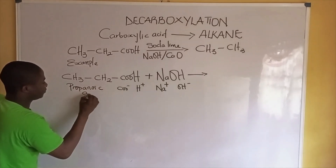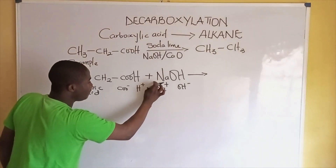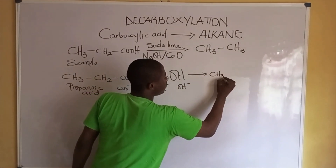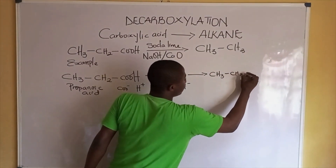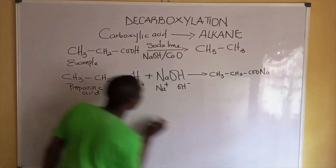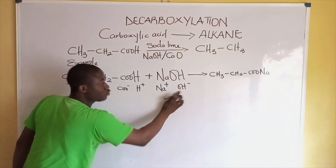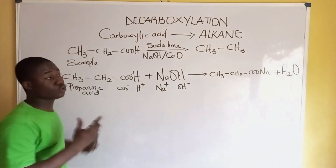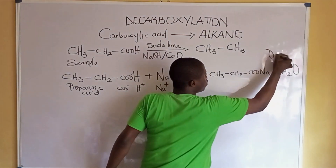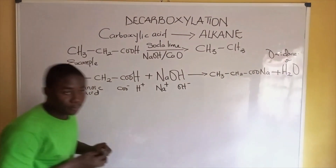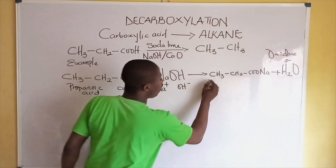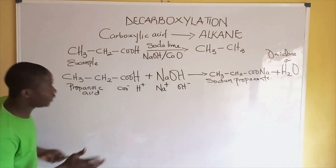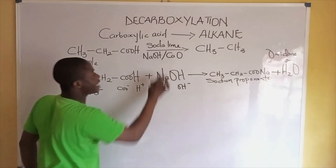When we do this, the sodium ion attracts to the COO⁻ group, so we get CH₃ bonding to CH₂ bonding to COONa as our product. The hydrogen ion and the hydroxide group attract together to form water, H₂O — also called oxidane. The product we've obtained is called sodium propanoate.